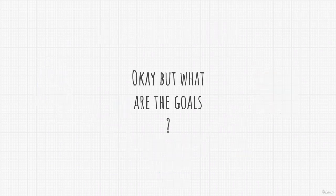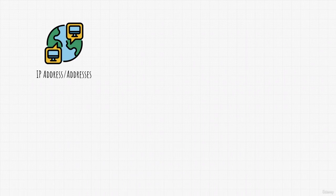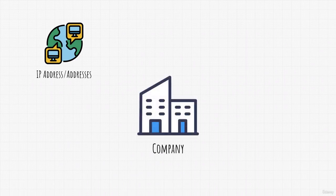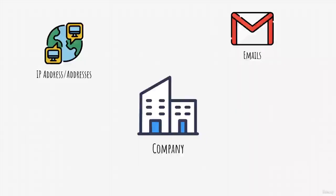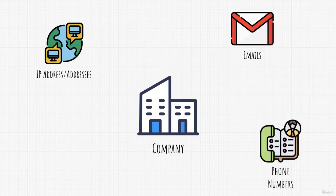What exactly are we searching for? Which information could be of value to us? Usually the first thing we search for is the target's IP address, or IP addresses if the target has multiple addresses — for example, a company with servers and buildings all around the world. We would also be interested in their employees: gathering their emails, which could be useful for a future attack, or their phone numbers, which could also be useful.